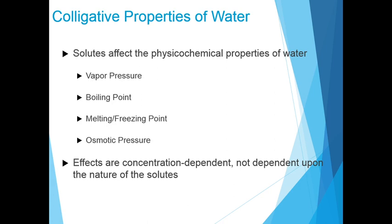Solutes of all kinds alter certain physical properties of the solvent such as water — in this case vapor pressure, boiling point, melting or freezing point, and osmotic pressure. These are called colligative properties. Colligative means 'tied together' because the effect of solutes on all four properties has the same basis: the concentration of water is lower in solutions than in pure water.